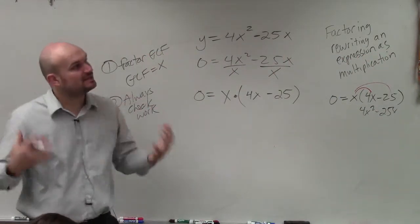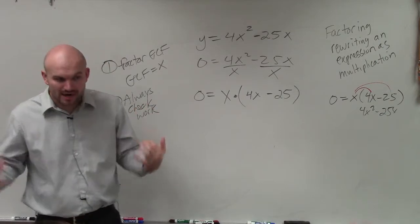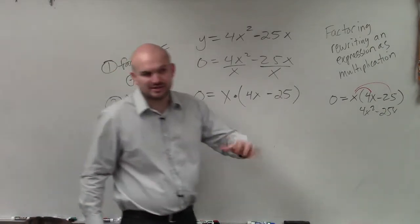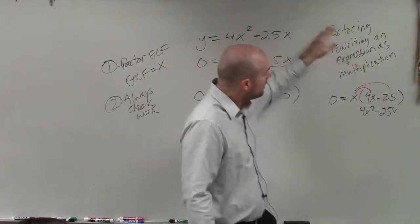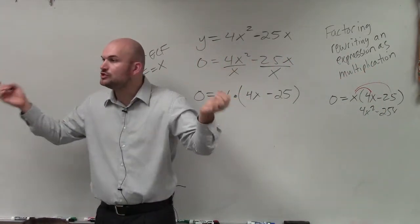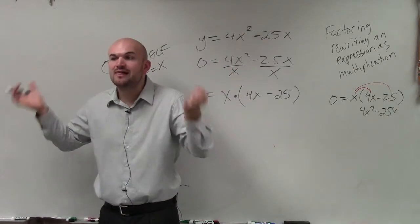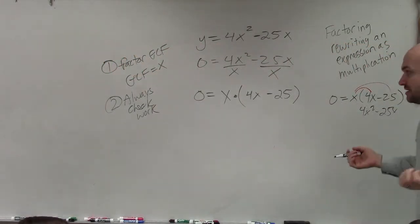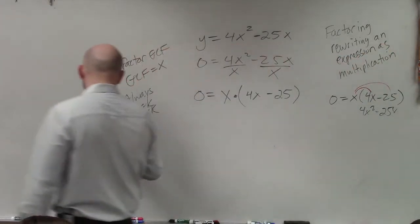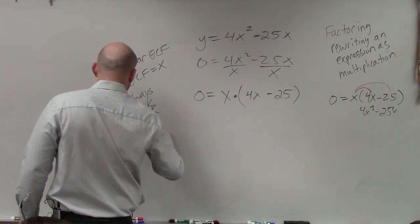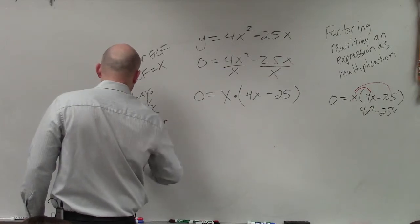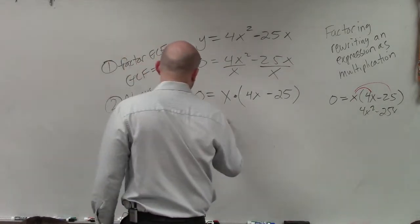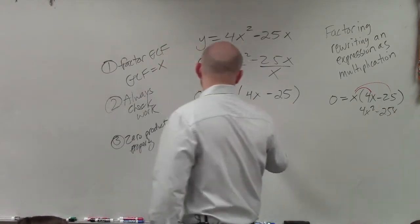So now, the last thing that we need to go over is what we call the zero product property. And what the zero product property states, the reason why we do factoring is we want to write it as a product. We want to write it as multiplication. Because whenever you have two numbers or two expressions that multiply to give you 0, one of them has to equal 0. So the last step is what we call the zero product property. And to do that, we just write each of these set equal to 0.